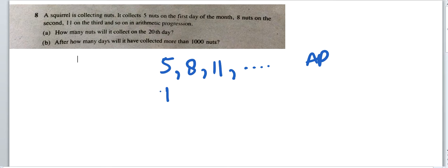How many nuts will it collect on the 20th day? We want to find the nuts collected on the 20th day, so we need t20. This is an AP, so we have the formula: a + (n-1) × d.